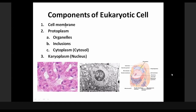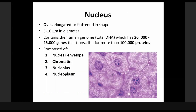In cytology, we have already seen the cell membrane, protoplasm with its organelles, inclusions, and briefly the cytoplasm. The last topic remaining to be covered today would therefore be the karyoplasm, or the nucleus.